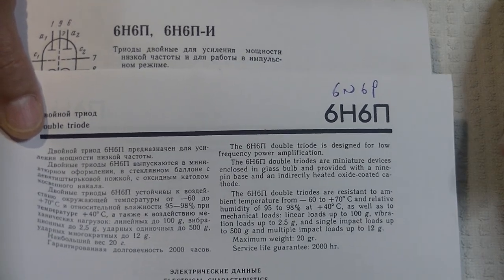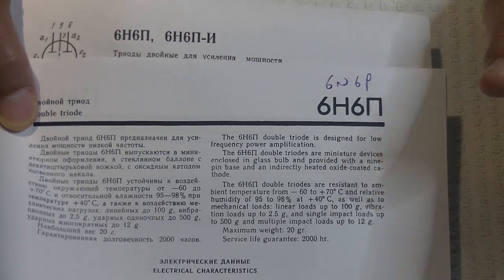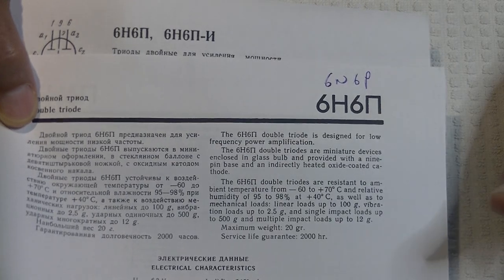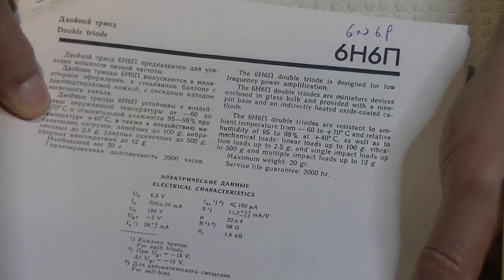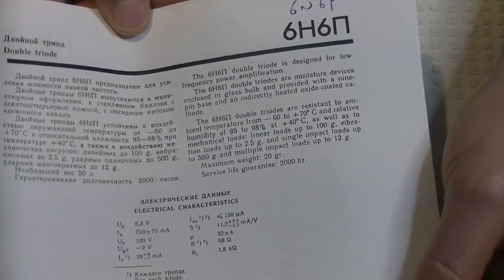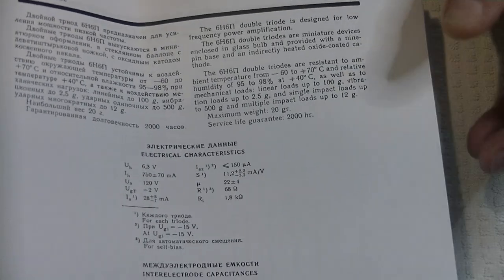Most computer tubes, not all but most, are not worth looking at. They were designed for on and off applications and are really not normally good for audio. This is a great data sheet series because they give a translation right on the sheet.